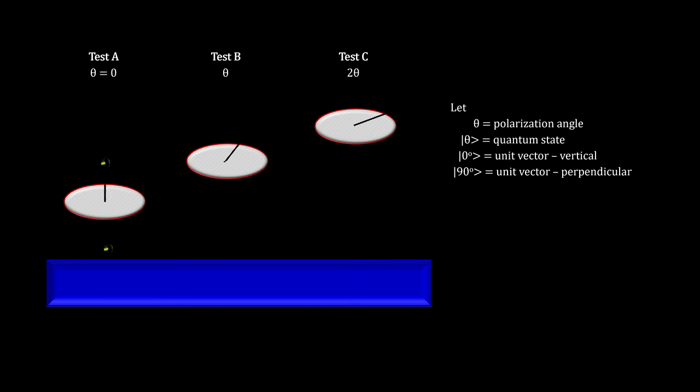Here we have three tests, A, B, and C. Test A sends vertically polarized photons into a vertically polarized filter. Test B sends vertically polarized photons into a filter polarized at an angle theta. And test C sends vertically polarized photons into a filter polarized at an angle 2 theta.